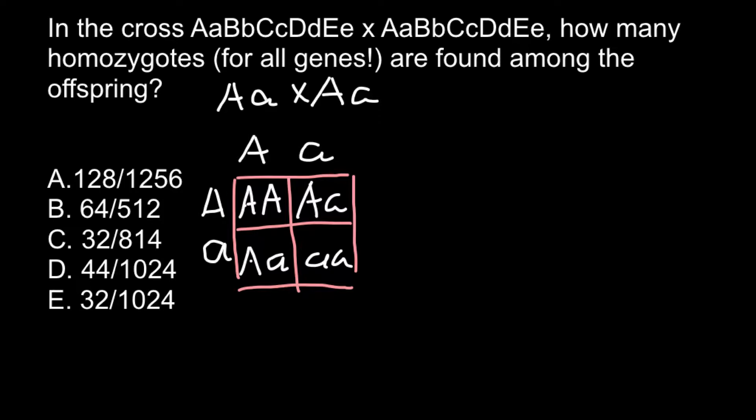When we have a monohybrid cross, we have one gene that in a diploid organism is presented by two alleles—one dominant, another recessive. We should get a square two by two, so four total squares, and two of them represent homozygotes. So two out of four would represent homozygous genotypes.